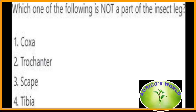Which one of the following is not a part of the insect leg? The insect leg contains the coxa, trochanter, femur, tibia, and tarsus, as well as tarsomeres. So from the given options, scape is not a part of the insect leg — scape is a part of the antenna.